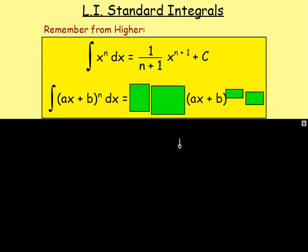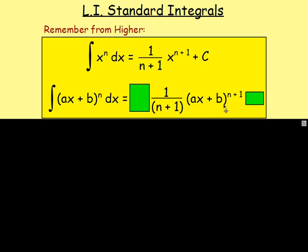What if instead you had the integral of ax plus b to the power of n? Well, again you do the same thing: ax plus b goes to the power of n plus 1, and you divide by n plus 1. However, you don't just have an x — you've got ax plus b in brackets. So you need to differentiate what is inside the brackets. If you differentiate ax plus b, you get a, and you also divide by that — so it's 1 over a. And finally, you need your plus c.